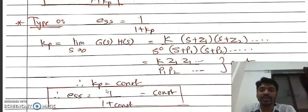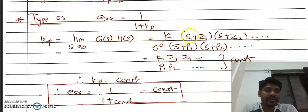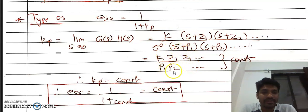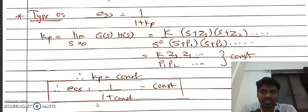For a Type 0 system, Kp = lim(S→0) G(S)H(S) = K·(z1·z2...) / (S^0 · p1·p2...). Substituting S = 0, since S^0 = 1, this gives K times constants divided by constants, which is a finite constant. So Kp = constant, and E_SS = 1 / (1 + Kp) = constant. Therefore, for a Type 0 system with unit step input, the steady state error is a finite constant.